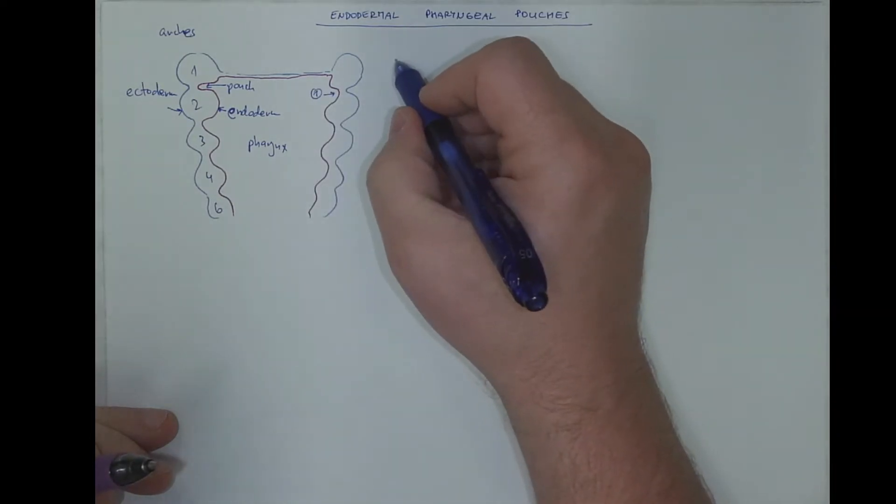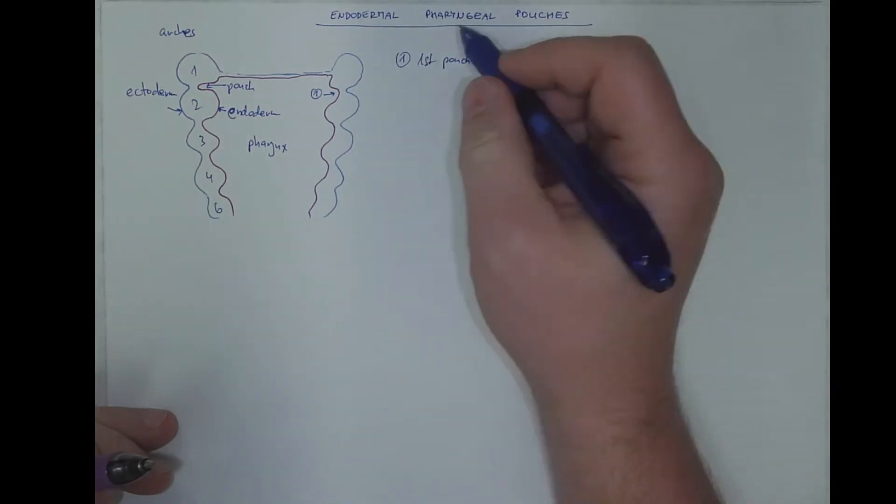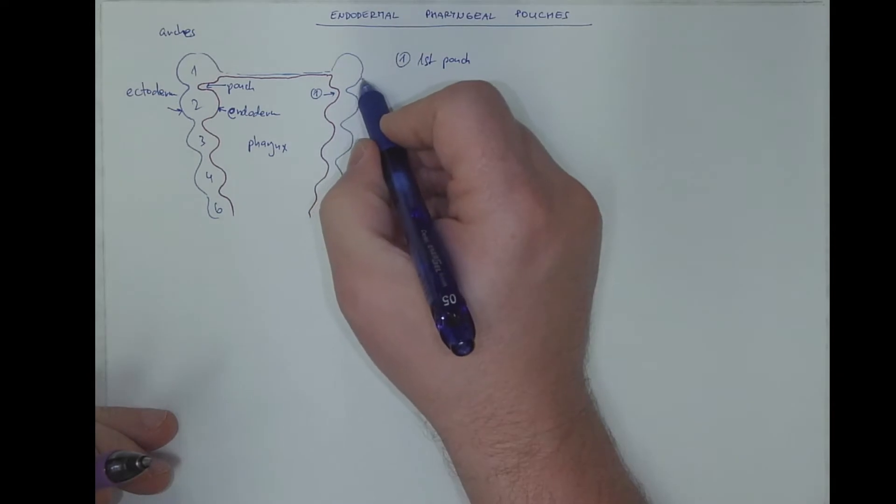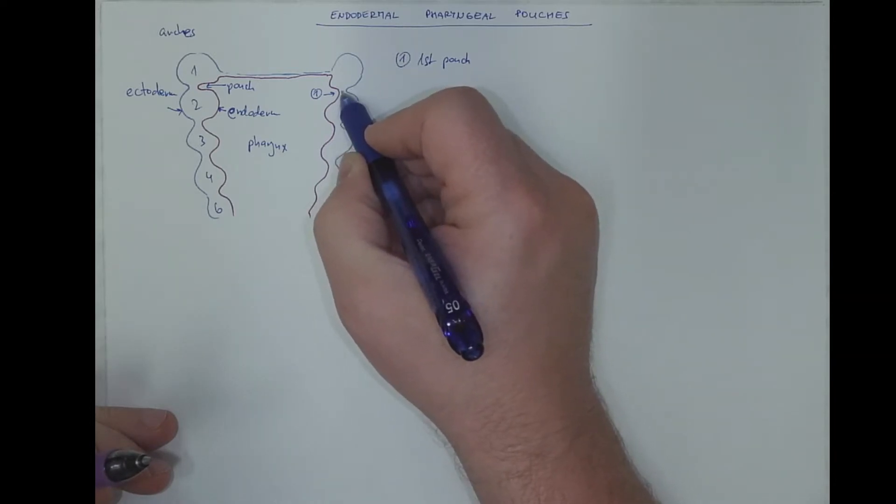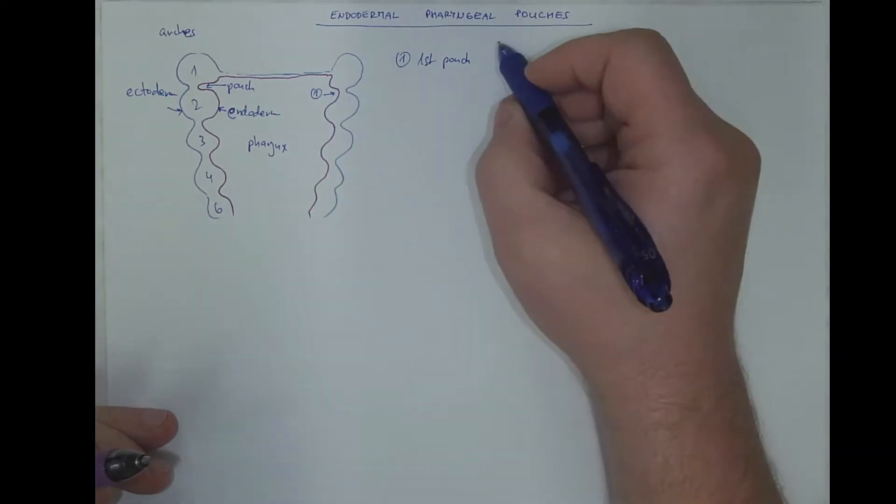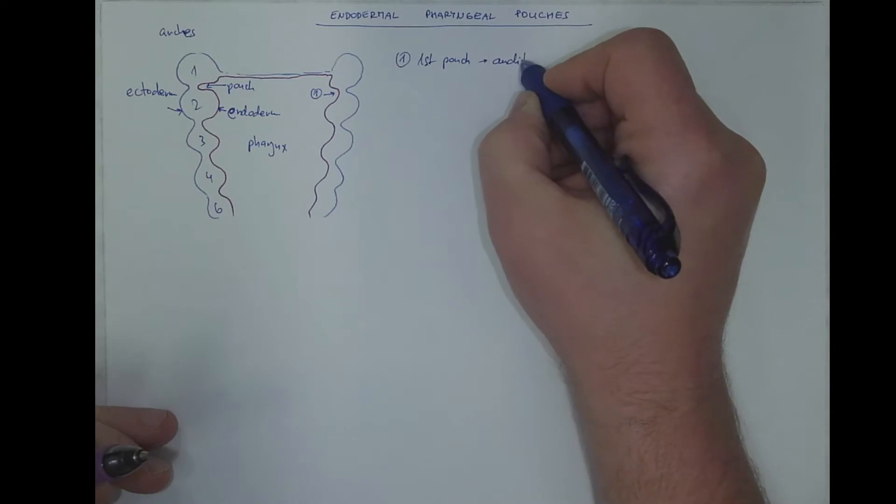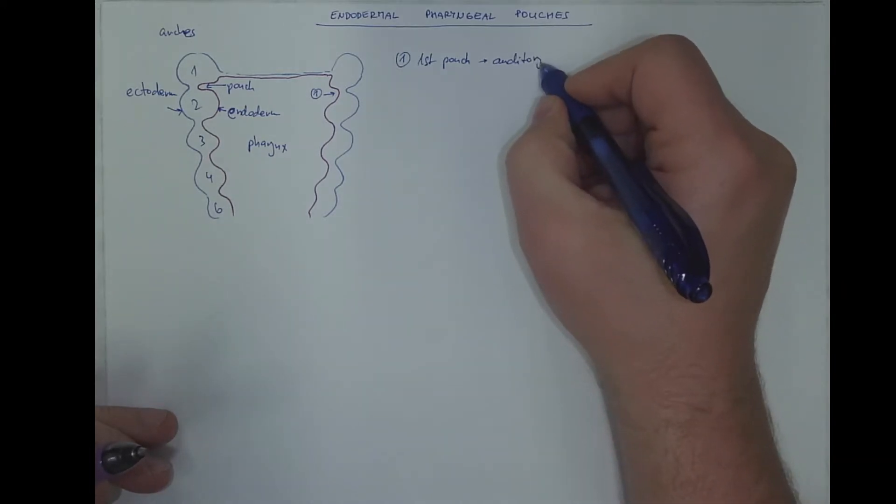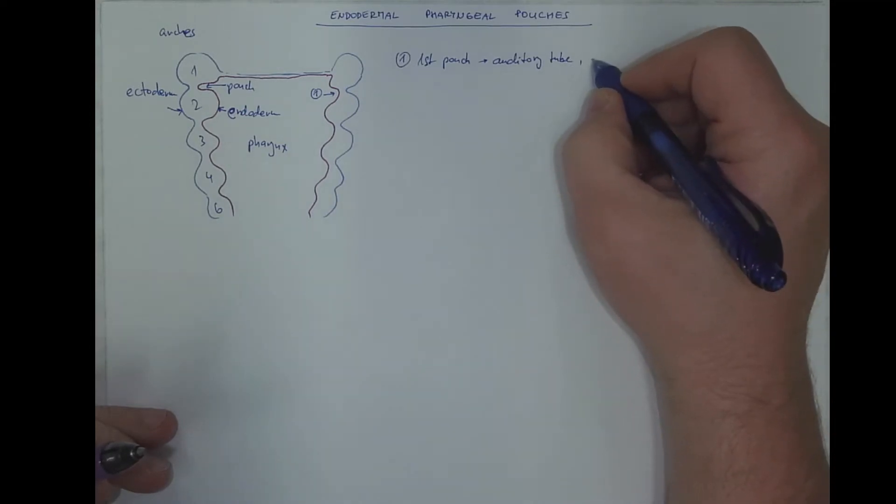What becomes out of the 1st pouch? We already know that if the 1st cleft becomes the auditory meatus, external auditory meatus with a tympanic cavity, this must be the auditory tube, connecting the nasopharynx with a tympanic cavity. So part of the tympanic cavity.